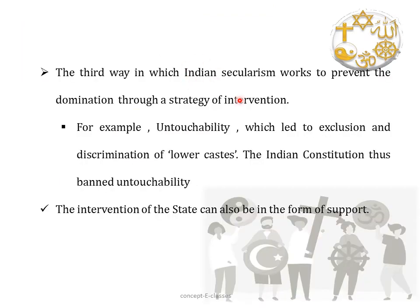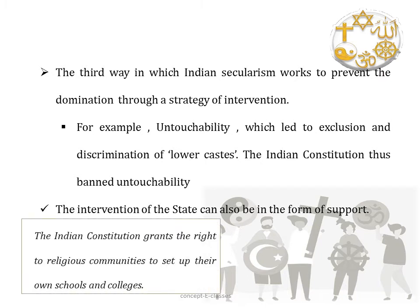The third way Indian secularism prevents domination is through the strategy of intervention. Taking the example of untouchability, upper caste Hindus dominate lower castes within the same religion. To prevent this, the Indian constitution bans untouchability. Here the state intervenes in religion to end this social practice of discrimination, which also violates fundamental rights. This intervention can also take the form of support — the Indian constitution grants religious communities the right to set up their own schools and colleges, and also provides them financial aid on a non-preferential basis.